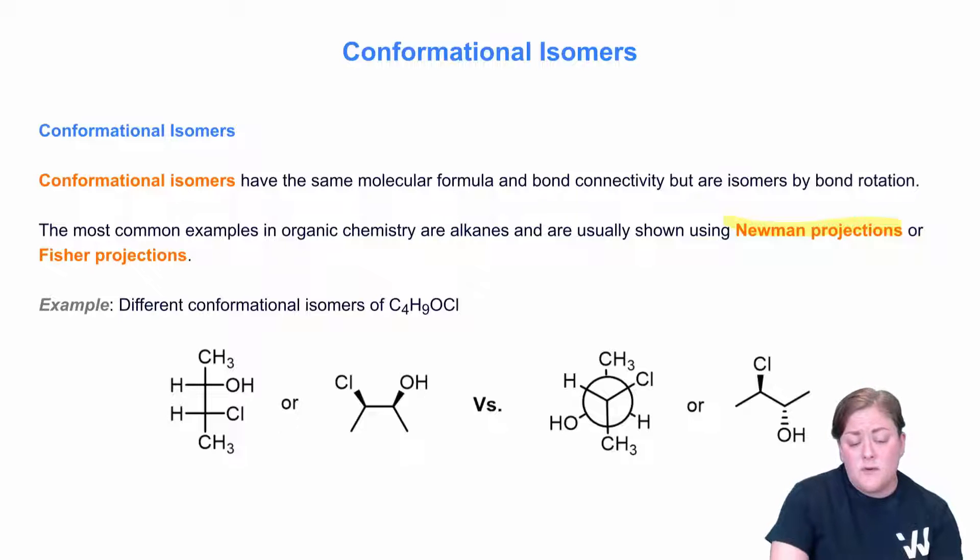So we've got the Newman projection versus the straight line formula. And you'll notice that this is resultant from rotation about the carbon-carbon single bond here. We typically show this type of arrow to denote that sort of rotation. And the same goes for the other structure.